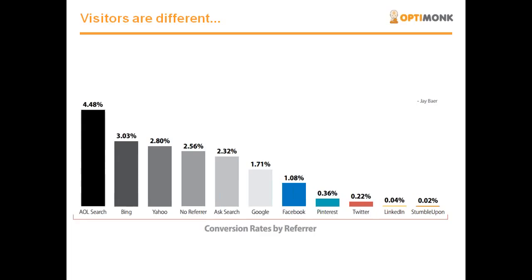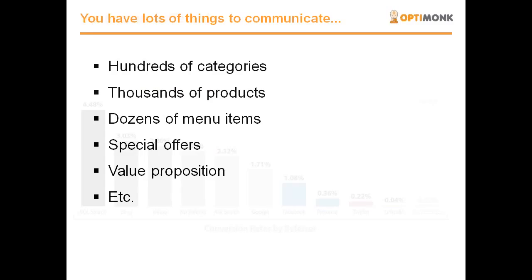So you have lots of different visitors and visitor groups. The truth is that these different groups usually respond to a very different kind of message. And if you want to maximize your conversion, you would have to communicate to all these channels differently. Often our solution to this problem is to provide more options for them to choose from — more menu items, more offers, divide the page into more areas, to hedge your bets.